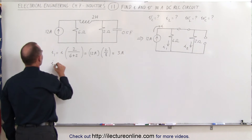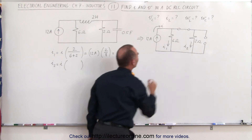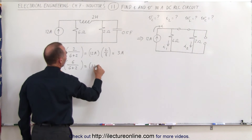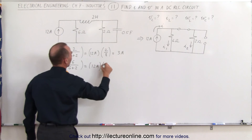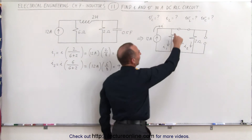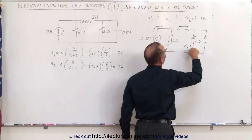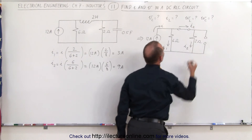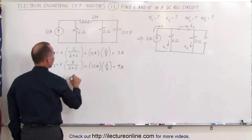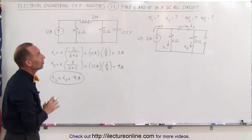I sub 2 equals I times the ratio of the resistance in the other branch divided by the total resistance — so 12 amps times 6 divided by 8, which is three quarters of 12, equal to 9 amps. Since 9 amps flow through that branch and the inductor is in that same branch, we can conclude that I sub L equals I sub 2, which is 9 amps.